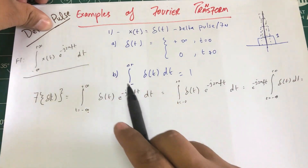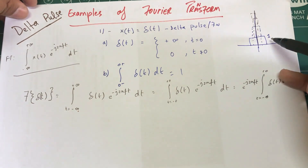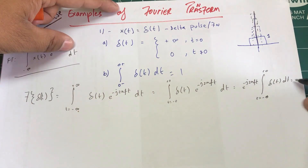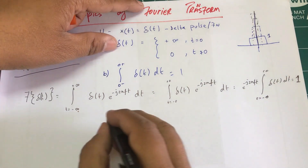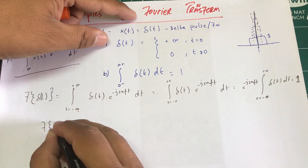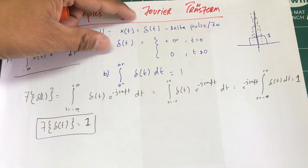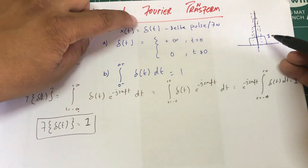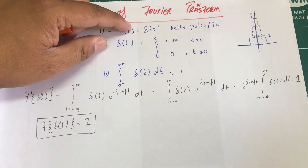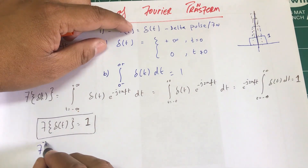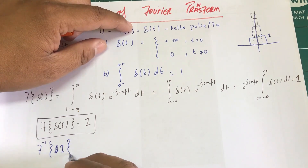What remains is the integral of delta(t) dt from zero-minus to zero-plus. As we established intuitively, the area under the curve of the delta function is just one. So the Fourier transform of delta(t) equals one. And of course the inverse Fourier transform of one is your delta function.